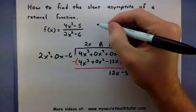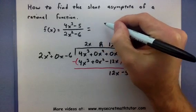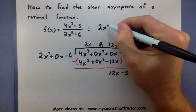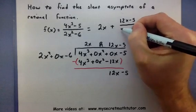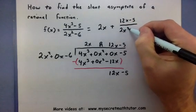What this is really showing me is that when I run through the division process, I get 2x plus my remainder, which is still being divided by the 2x squared minus 6.